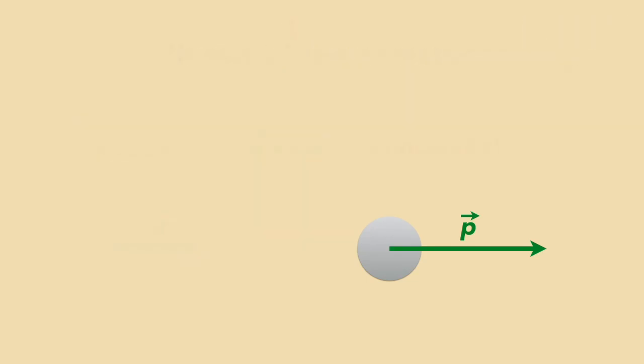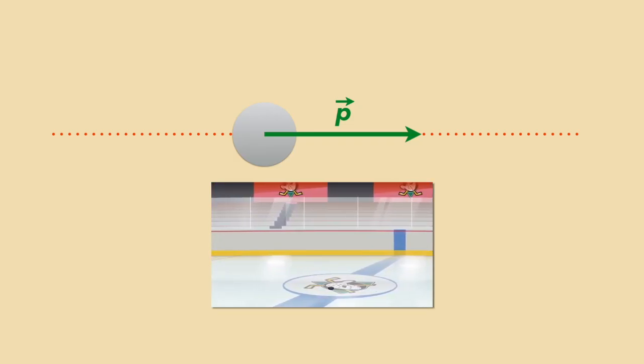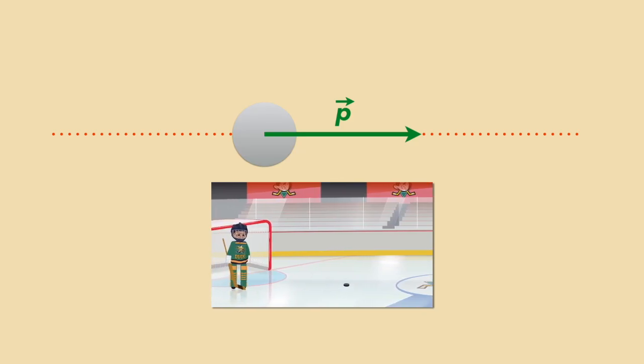Newton's first law says that an object does not change its velocity, that is its momentum, on its own. It is moving uniformly along a straight line unless something else acts on it. That is your hockey puck on frictionless ice.